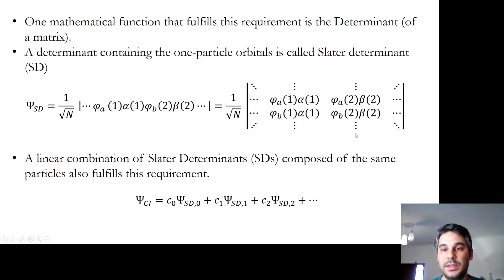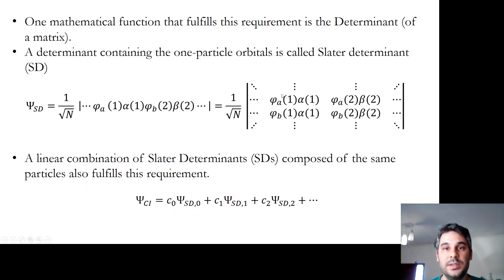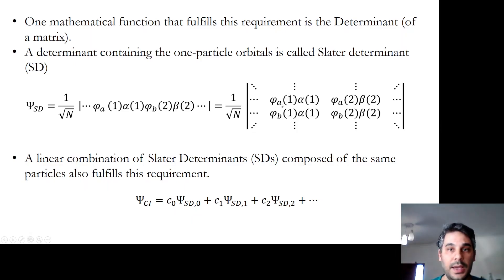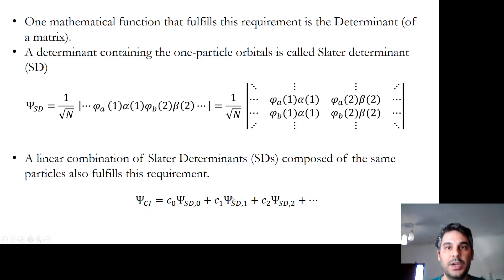This list notation is shorthand for a determinant where the different columns contain the different electrons — electron 1, 2, 3, etc. — and the different rows contain the different orbitals: phi_a, phi_b, phi_c, etc. A linear combination of Slater determinants is also anti-symmetric. Certain wave functions can be composed of many Slater determinants, and this will become important later.